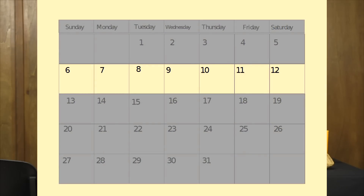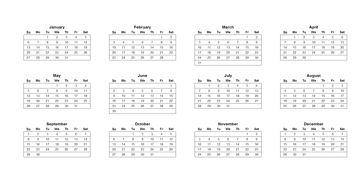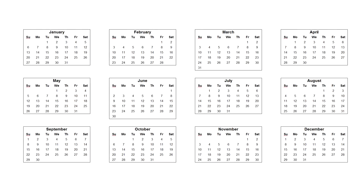There are seven days in a week — one week, seven days. There are 52 weeks in a year. And there are 12 months in a year. Yes, there are 12 months in a year.